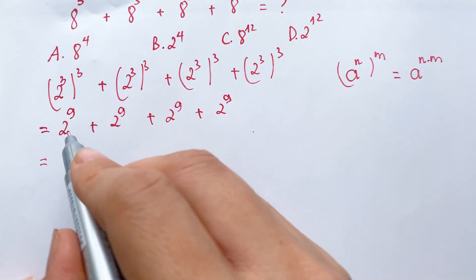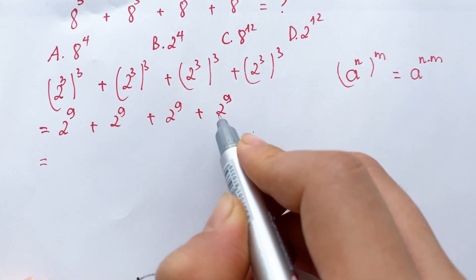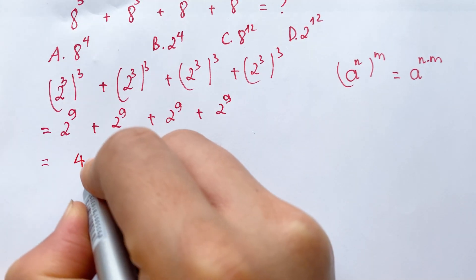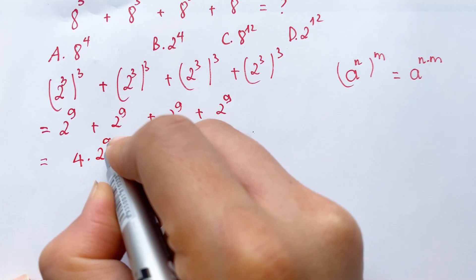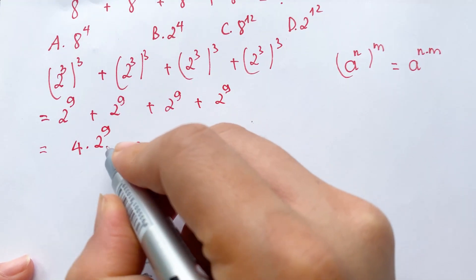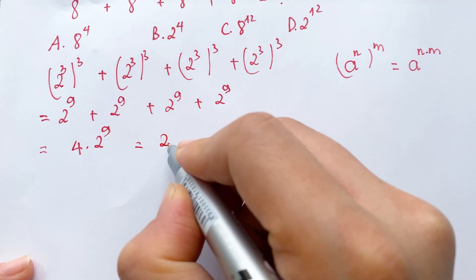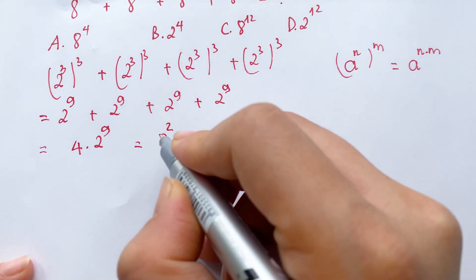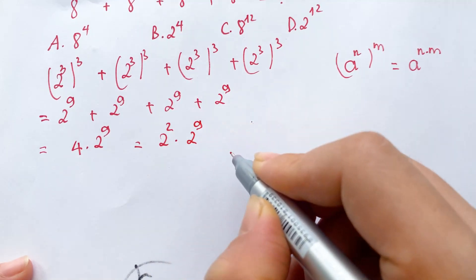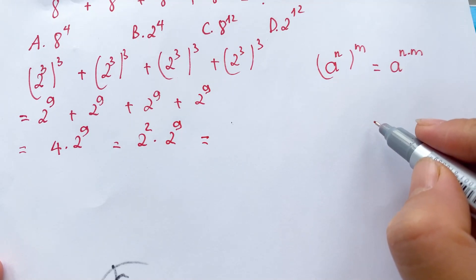You can also see: one, two, three, and four. Therefore we have four times 2^9. And four you can also write as 2^2, times 2^9.